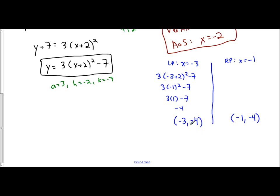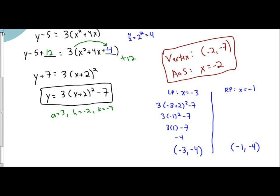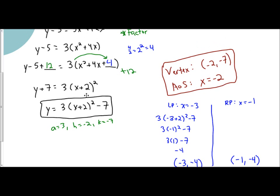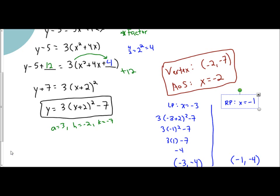So now you have all the pieces of information necessary to graph. All of it stems from getting your function in general form by completing the square, identifying a, h, and k for your vertex and axis of symmetry, and using the axis of symmetry to assist in finding a point to the left and a point to the right. I hope you found this video helpful. If you need any extra assistance, just go back through the other videos to develop your understanding.